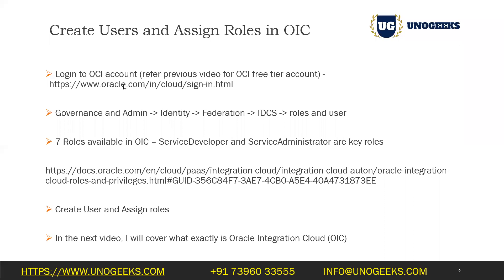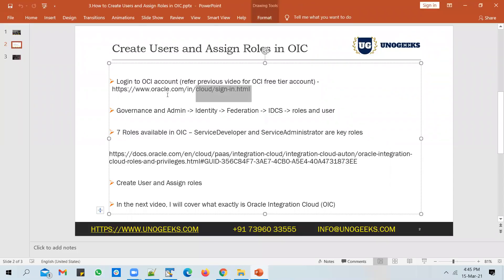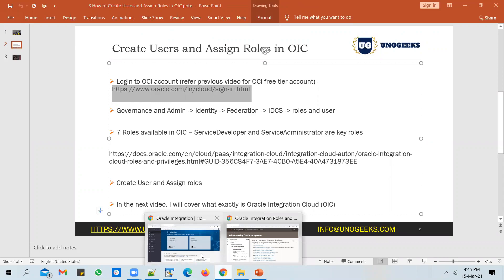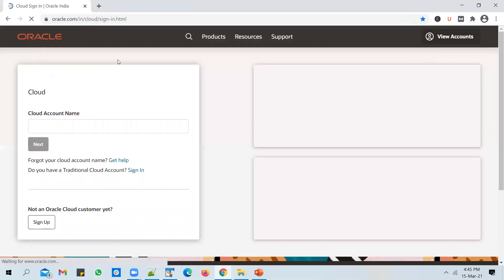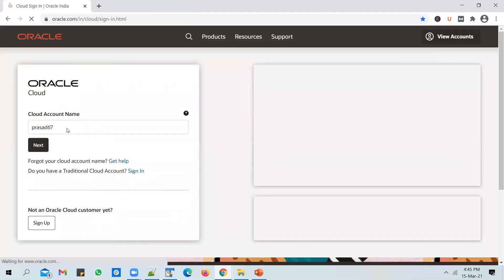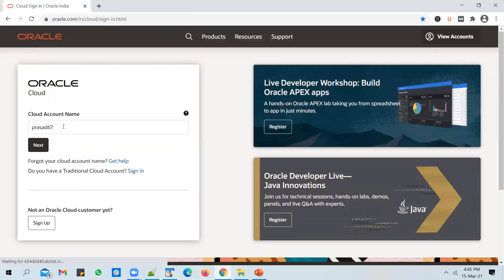You have to first log into the OCI account. The prerequisite for this is you need to have an OCI account. If you don't have one, you can refer to one of my previous videos where I've shown how to create a free trial account in three simple steps. Just take the sign-in URL, log into the OCI dashboard. It will prompt you to enter the cloud account name — you will receive an email with a cloud account name and other details when you create an Oracle Cloud account. Key in the cloud account name and click next.